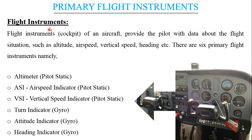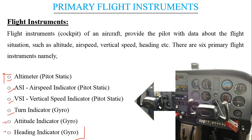So what is a flight instrument? Flight instruments are instruments which are generally placed in the cockpit of an aircraft and provide the pilot with data about the flight situation, such as altitude, vertical speed, airspeed, and heading. In particular there are six primary flight instruments. These six instruments are the basic instruments which can be found in any kind of aircraft, and in this session we will be focusing on the first four instruments as they are particularly mentioned in the syllabus.